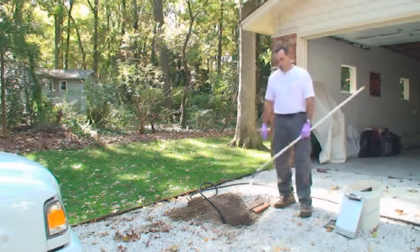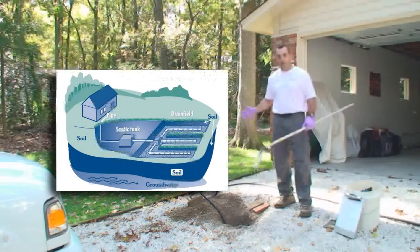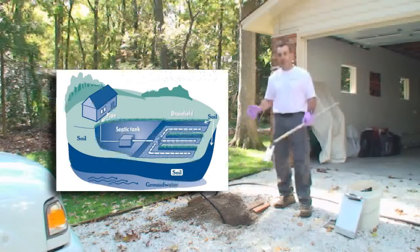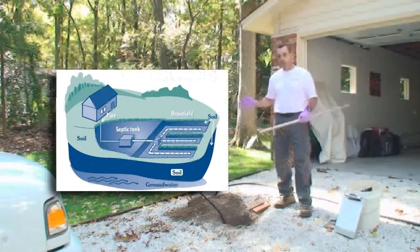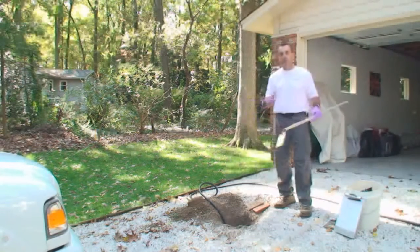The system is usually broken down into three parts: the treatment tank itself, after the treatment tank you have a distribution system of some type, and after the distribution system you have an absorption system. We try to inspect and report on each individual part.